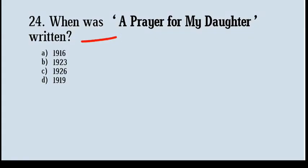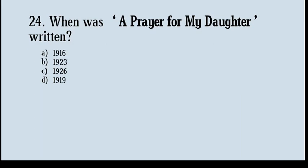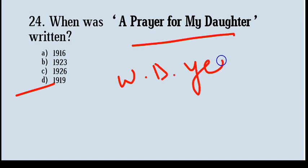When was 'A Prayer for My Daughter' written? Options: 1916, 1923, 1926, 1919. Correct answer: option number D, 1919. 'A Prayer for My Daughter' is a poem written by W.B. Yeats, published in 1921, written in 1919, as part of the Yeats collection Michael Robartes and the Dancer.